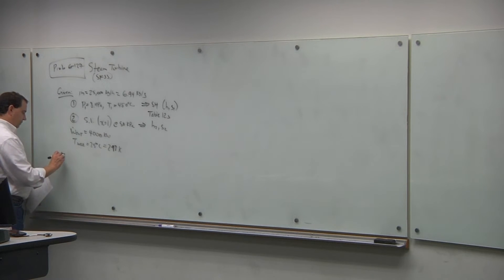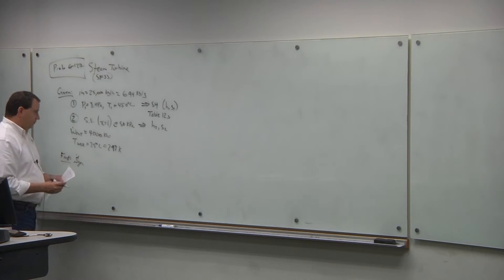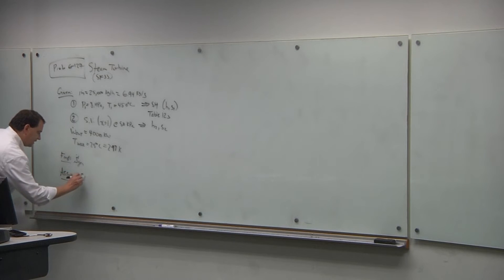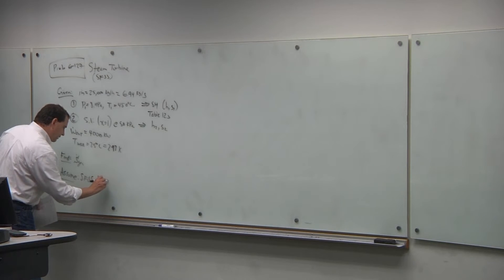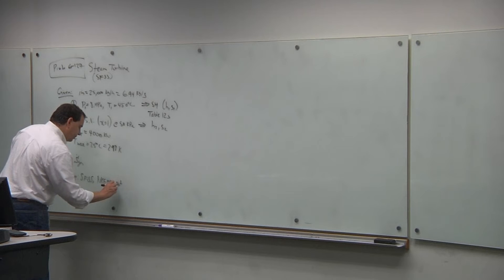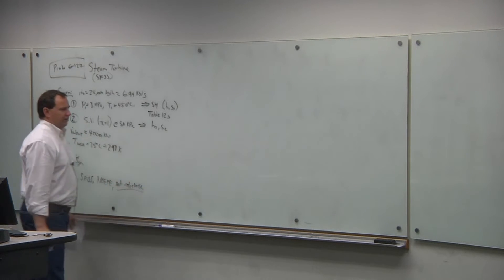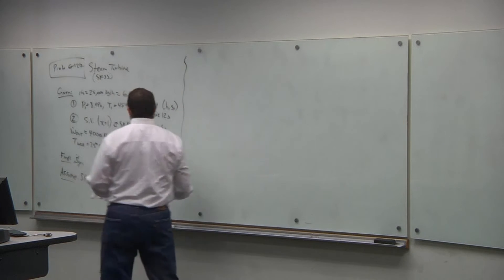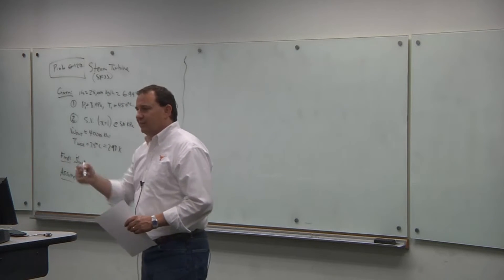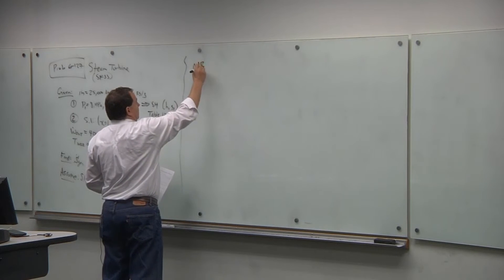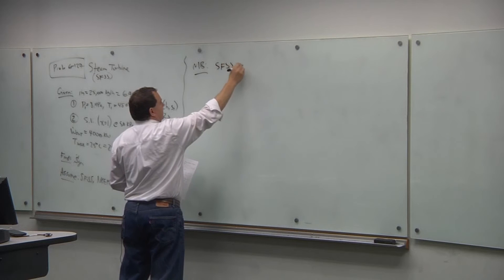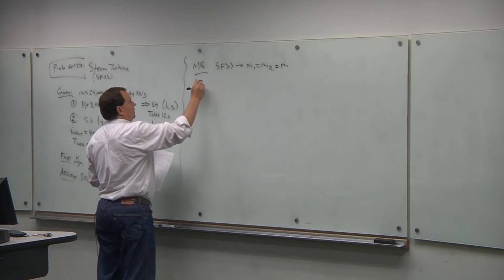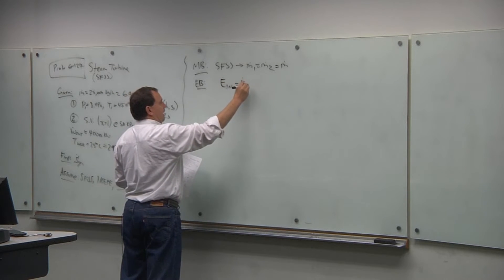We're given work rate out = 4,000 kW, and surrounding temperature = 25°C = 298 K — don't forget to convert Celsius to Kelvin. We want the rate of entropy generation. Assumptions: steady flow/steady state, negligible changes in potential energy. We cannot assume adiabatic here since we're not told the turbine is insulated.